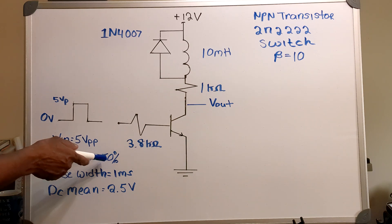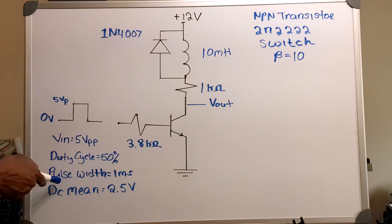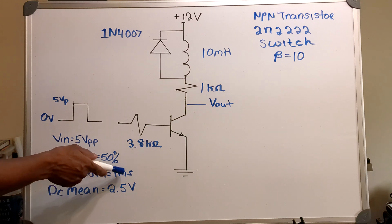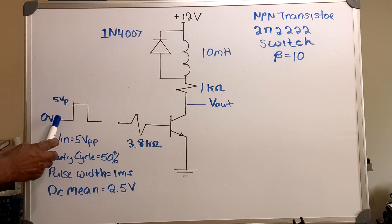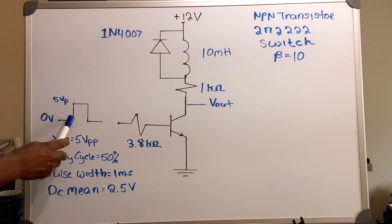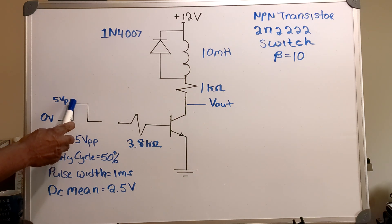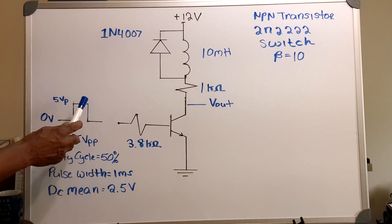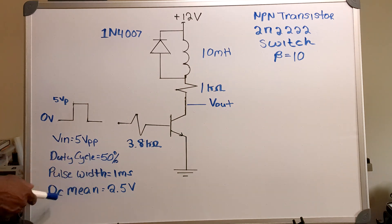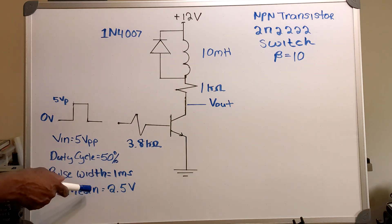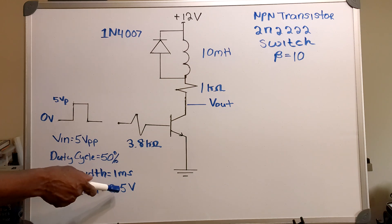The duty cycle equals 50%. The pulse width equals one millisecond — that means one millisecond from the rising edge to the falling edge, and one millisecond from the falling edge back, giving a 50% duty cycle. The DC mean is two and a half volts.